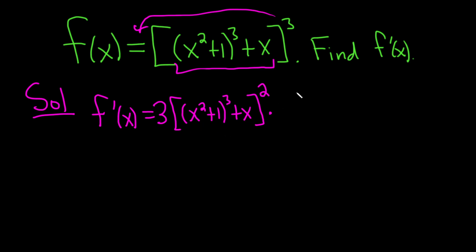So we'll bring down that 3. So we have 3. I'm going to put a parentheses here just to add clarity. Parentheses x squared plus 1, subtract 1 from the exponent squared, times the derivative of the inside. Well, the derivative of x squared is 2x, the derivative of 1 is 0. Plus the derivative of x, which is 1. Boom.